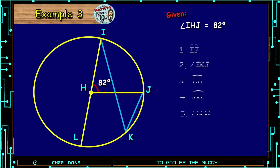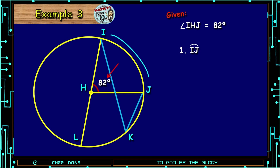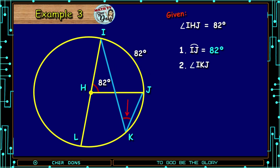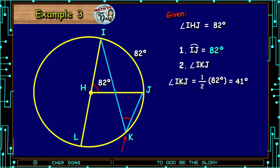We're going to find the measures of the following. For number one, we have arc IJ. Take note that Angle IHJ is equal to 82 degrees. This is a central angle, so Angle IHJ is equal to its intercepted arc. Arc IJ is equal to 82 degrees. For number two, Angle IKJ — look at the intercepted arc, arc IJ equals 82 degrees. The given angle is an inscribed angle; its vertex lies on the circle. So Angle IKJ equals one-half of arc IJ: 82 degrees divided by 2 is 41 degrees. Therefore, Angle IKJ is equal to 41 degrees.